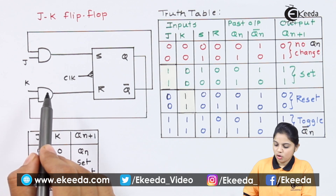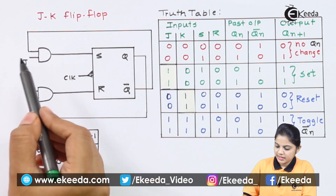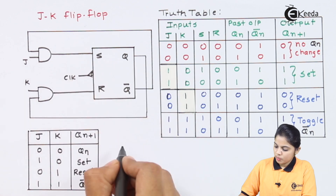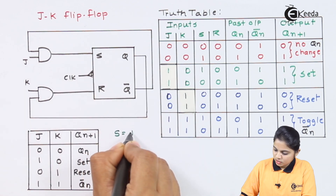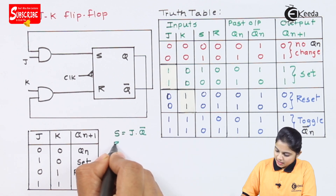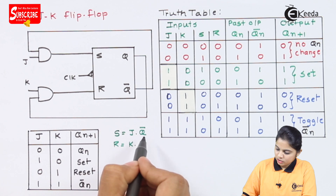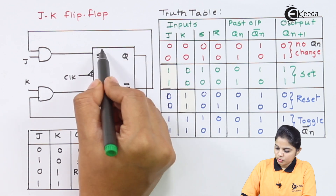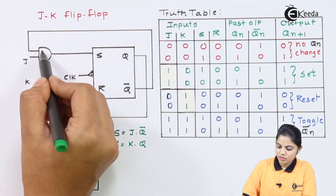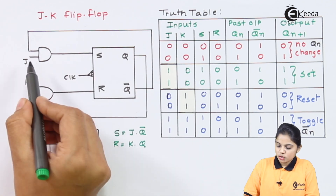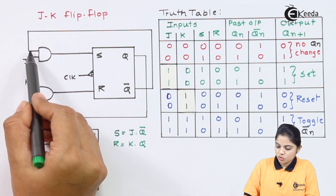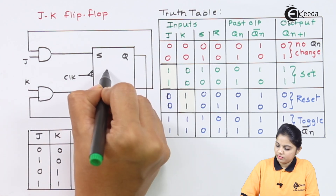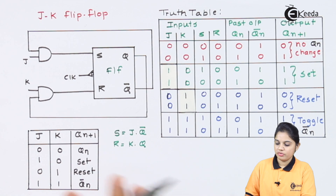Here we have a diagram for a JK flip-flop where SR flip-flop is connected with two AND gates where J and K are given as inputs. Basically in JK flip-flop, S is equal to J·Q̄ and R is equal to K·Q, where Q and Q̄ are the outputs of the SR flip-flop. The past outputs of the SR flip-flop are connected back as inputs, so we call it a sequential circuit. Along with J and K, these two inputs are also important to decide the state of the flip-flop. Clock is provided to the SR flip-flop.